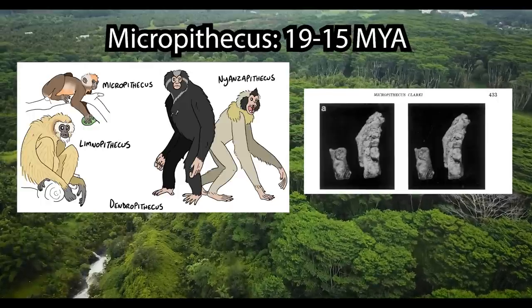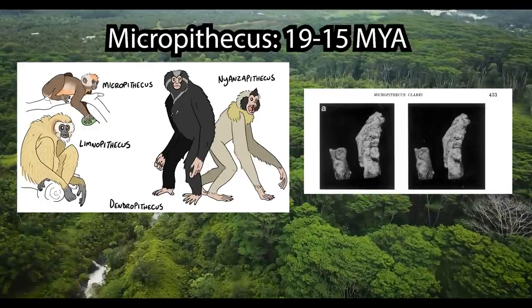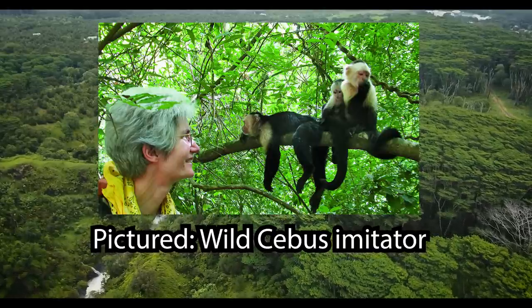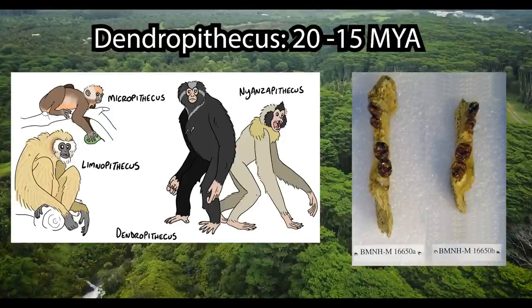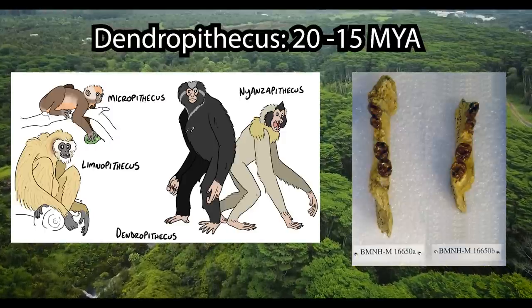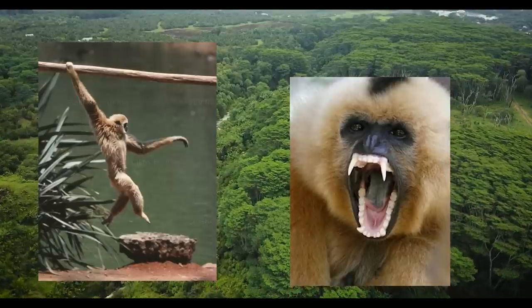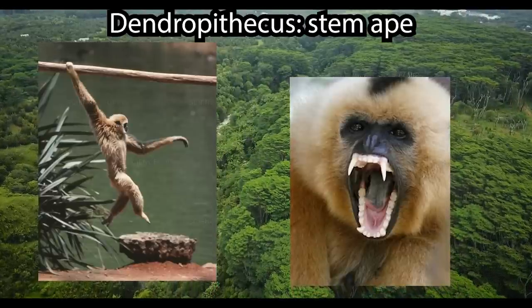But the early Miocene was home to more than just Proconsul, Ekembo, and Rangwapithecus. Micropithecus is known for its diminutive size — it is an ape that was roughly the size of a modern-day capuchin monkey — making it the smallest ape known to have ever lived. Dendropithecus was originally thought to have been a relative of gibbons due to its morphology lending itself to brachiation, as well as its long and scimitar-like canine teeth; however, it is now considered to be a stem ape.